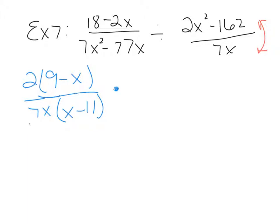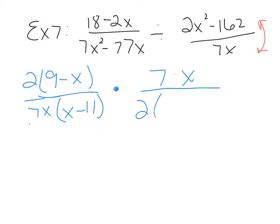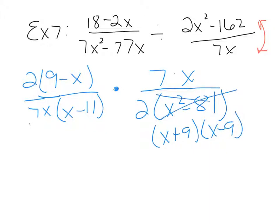We change to multiply and flip this fraction. Make sure you never flip the first fraction — only the second. Keep it, change to multiply, then flip the second fraction. The 7x monomial can be separated as 7 times x. The numerator 2x squared minus 162 has a GCF of 2, leaving x squared minus 81, which is the difference of squares and factors to x plus 9, x minus 9.